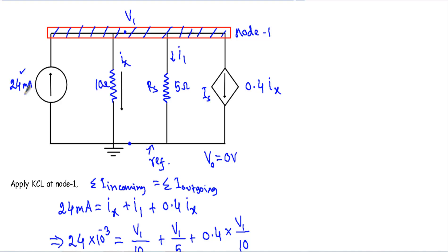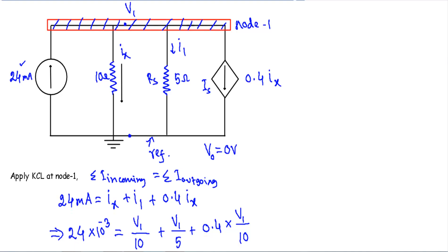The only incoming current is 24 milliampere, written on the left side. The outgoing currents are ix, I1, and 0.4ix. So: 24 × 10⁻³ = ix + I1 + 0.4ix. The value of ix is the current through the 10 ohm resistor: ix = (v1 − v0) / 10 = v1 / 10. The value of I1 is the current through the 5 ohm resistor: I1 = v1 / 5. The source current is 0.4ix.